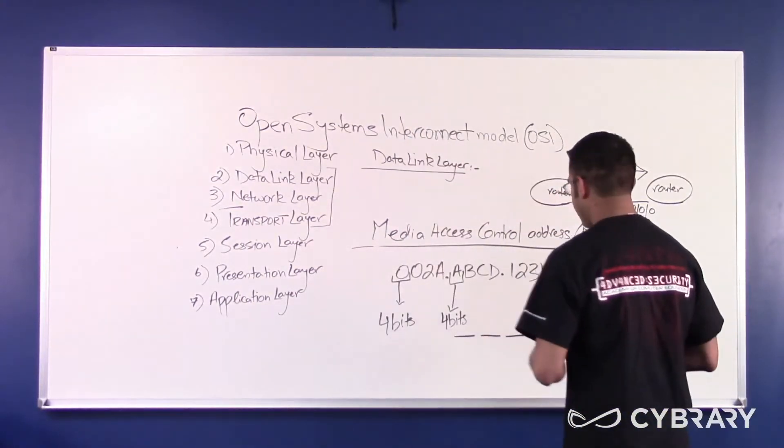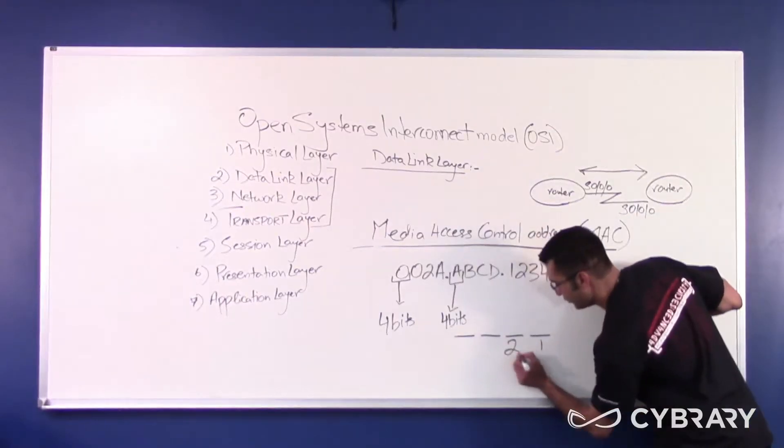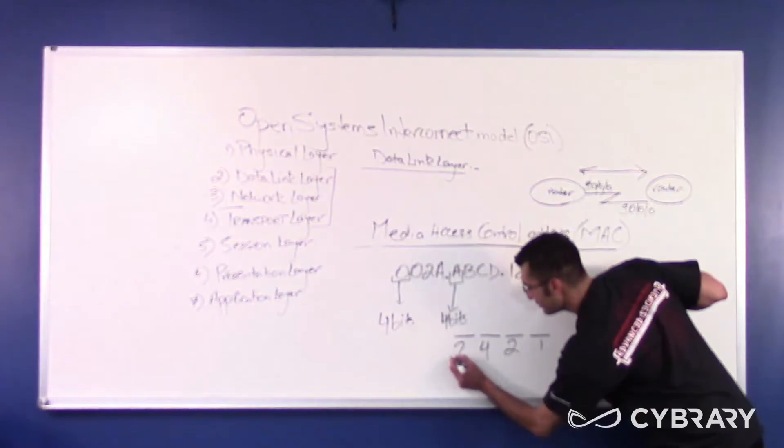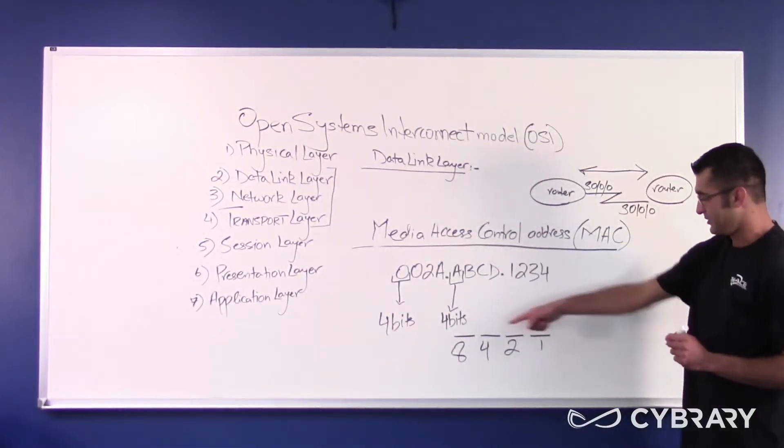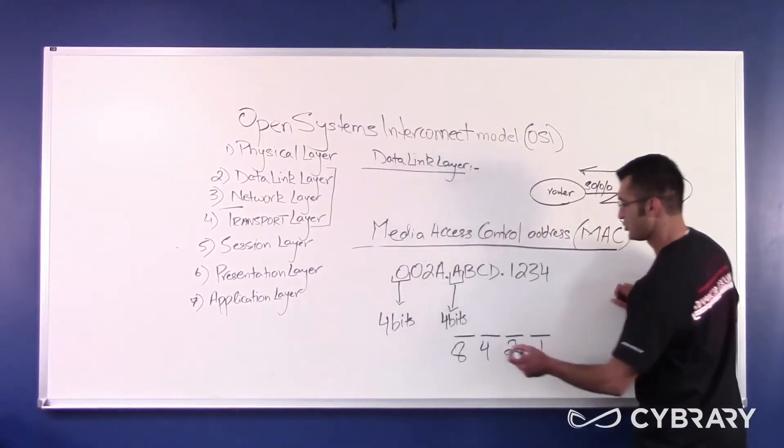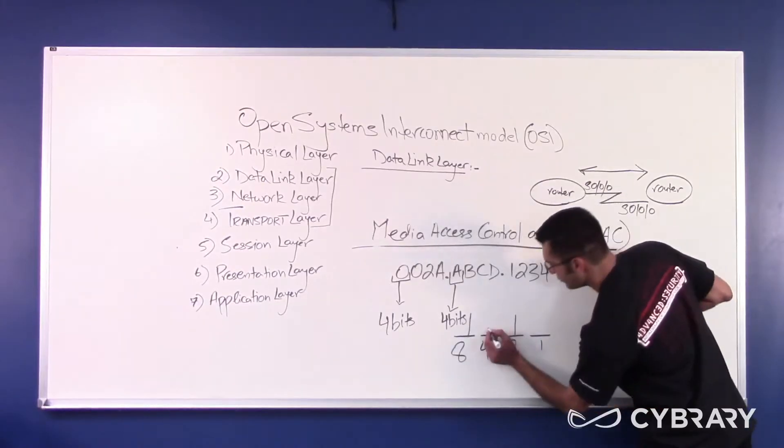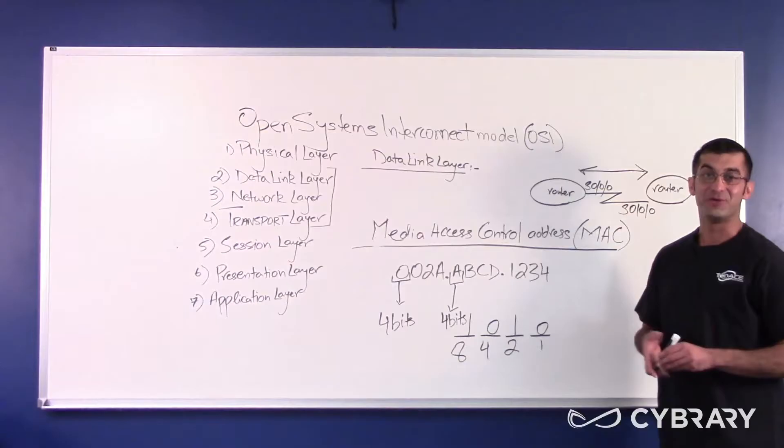Each one of these bits has a specific value attached to it, and this value never changes. From the very right hand side, you start with a number 1, then you double it you get 2, you double it you get 4, you double it and you get the number 8. How do I get A out of these 4 bits? It actually stands for 10, so the 8 bit is on and the 2 bit is on. The 4 and the 1 bits are turned off. That gives you A.